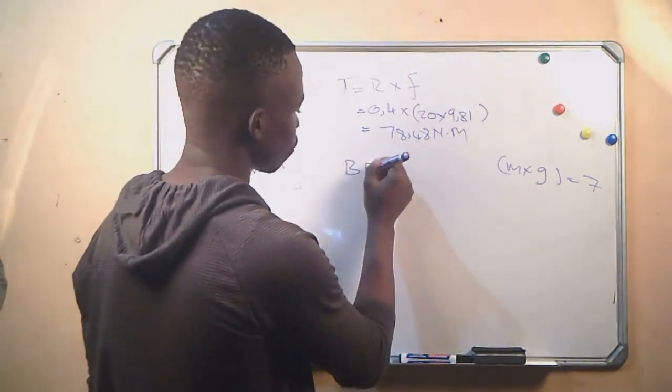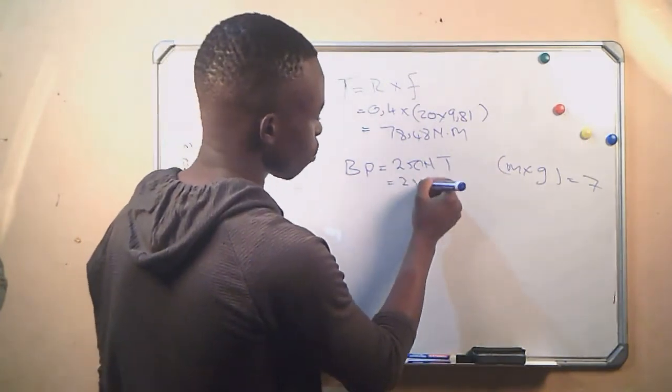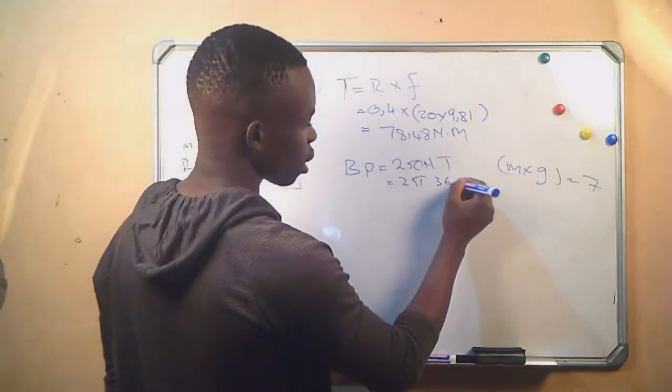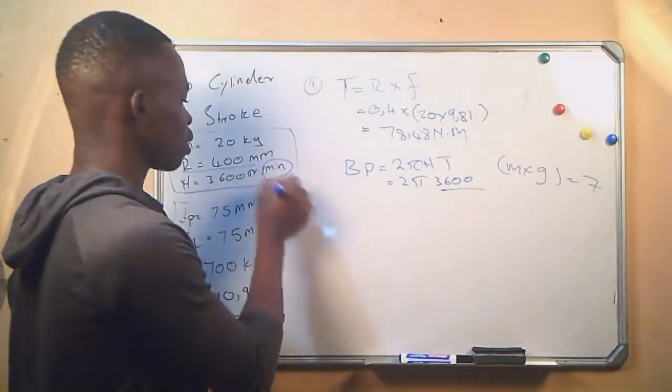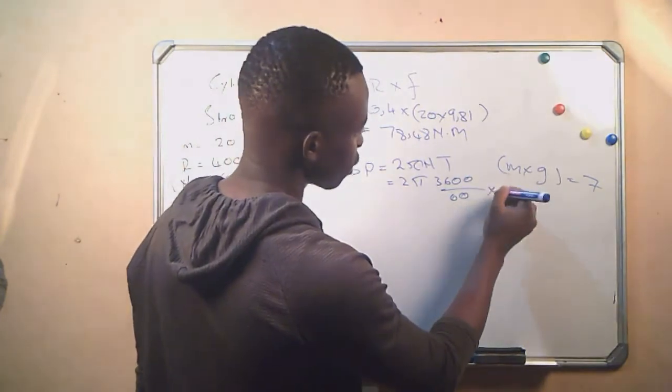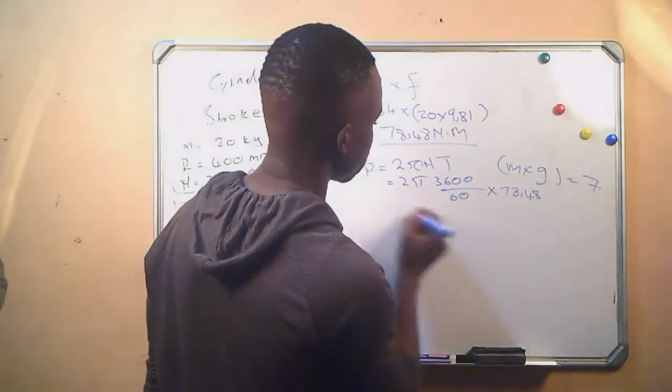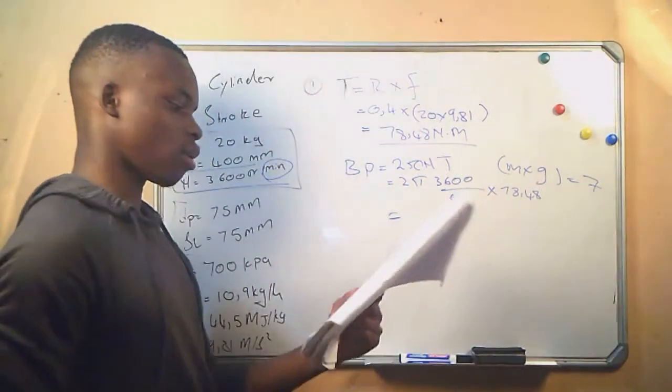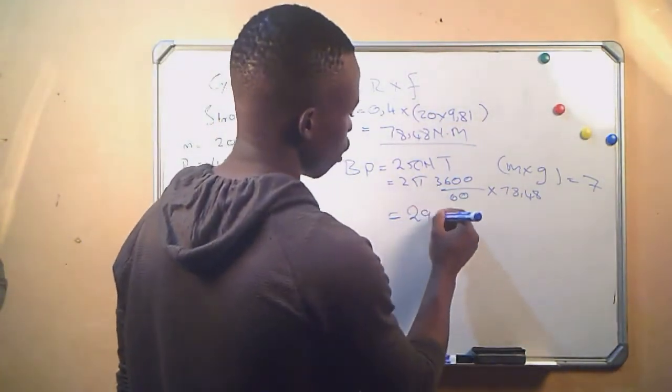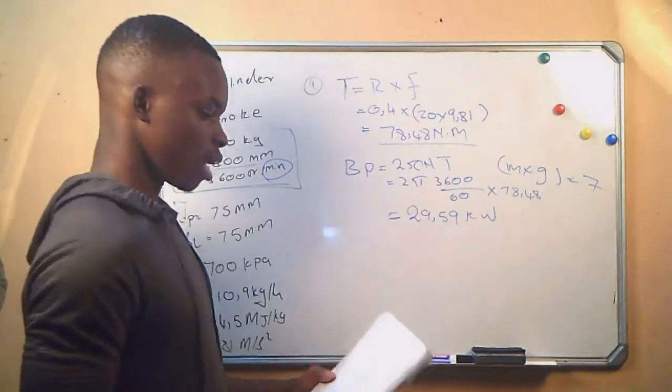And then the brake power. Brake power equals 2πNT. Our rotational frequency is 3600 revs per minute, so we have to convert to seconds. 2π times 3600 divided by 60 times the torque which is 78.48, which gives us an answer of 29.59 kilowatts.